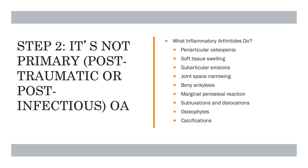When you think it is not primary, post-traumatic, or post-infectious osteoarthritis, you start thinking of inflammatory arthritis. Inflammatory arthritis causes periarticular osteopenia, soft tissue swelling due to inflammation, subarticular erosions, joint space narrowing, bony ankylosis, and a marginal periosteal reaction in some cases. They can also cause subluxations and dislocations as they progress to osteoarthritis, as well as associated soft tissue calcifications.